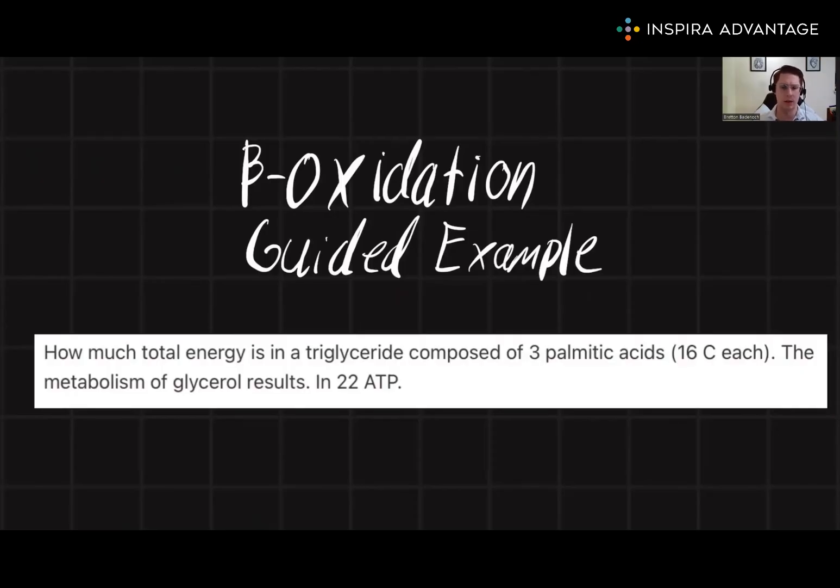How much total energy is in a triglyceride composed of three palmitic acids, each are 16 carbons long? The metabolism of glycerol results in 22 ATP. Take a few minutes to try and calculate this out on your own before I walk you through.